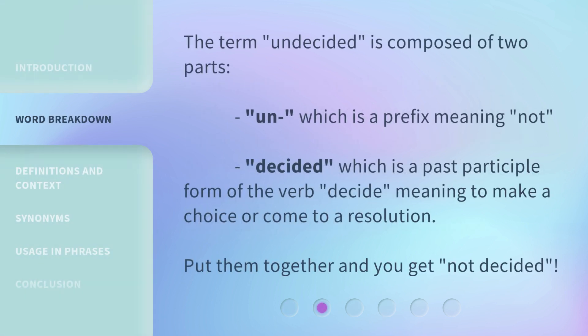The term 'undecided' is composed of two parts. 'Un,' which is a prefix meaning 'not,' and 'decided,' which is the past participle form of the verb 'decide,' meaning to make a choice or come to a resolution. Put them together and you get 'not decided.'